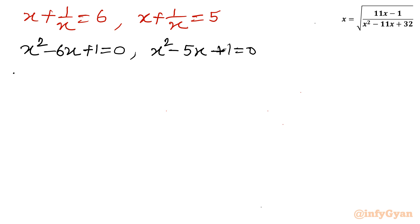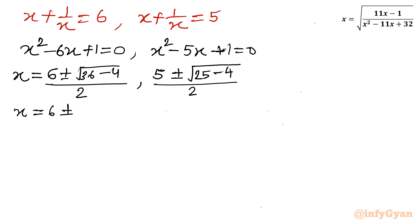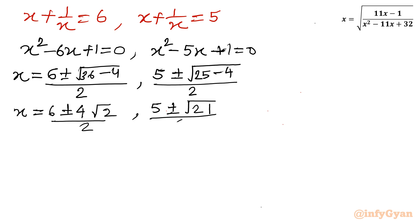Applying the quadratic formula: for the first equation, x equals (6 plus or minus square root of 36 minus 4) over 2, giving (6 plus or minus 4 root 2) over 2, which simplifies to 3 plus or minus 2 root 2. For the second: x equals (5 plus or minus square root of 25 minus 4) over 2, giving (5 plus or minus root 21) over 2.